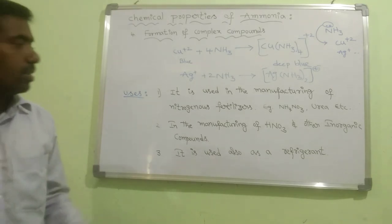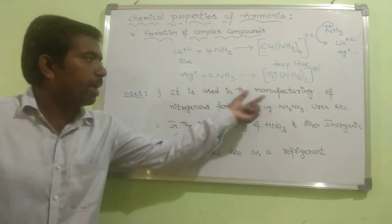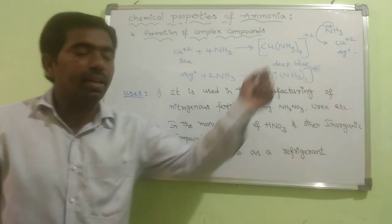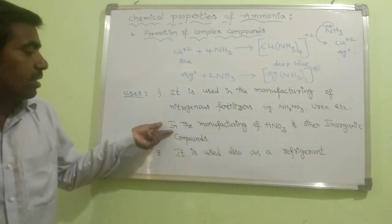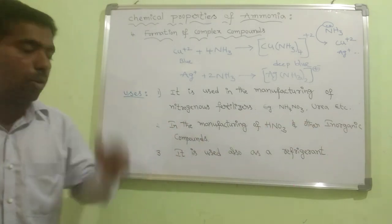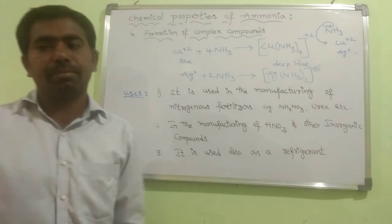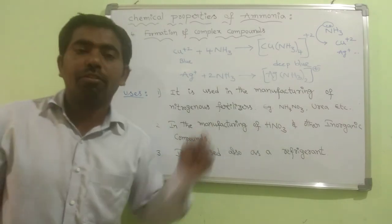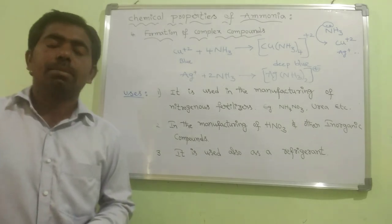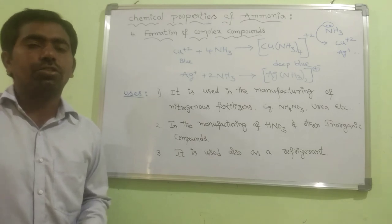The uses of ammonia: first, it is used in the manufacturing of nitrogenous fertilizers, for example ammonium nitrate, urea, etc. Second, in the manufacturing of HNO₃ (nitric acid) and other organic compounds. Third, it is also used as a refrigerant. This concludes the topics of preparation, properties, and uses of ammonia.